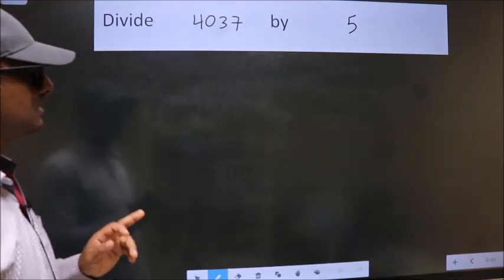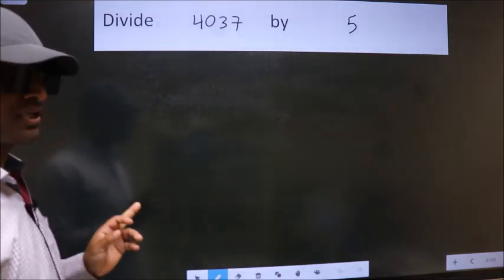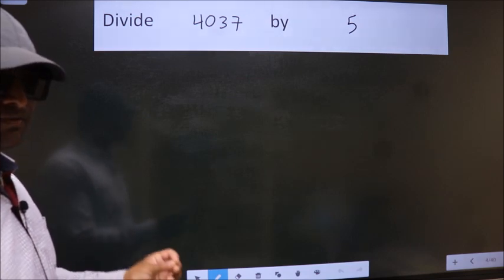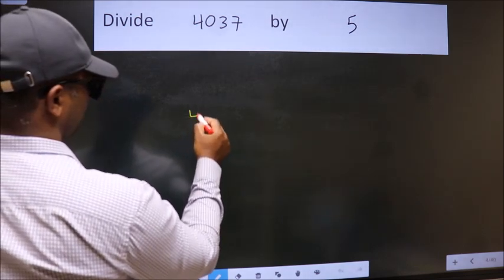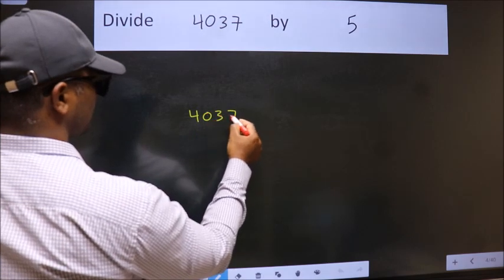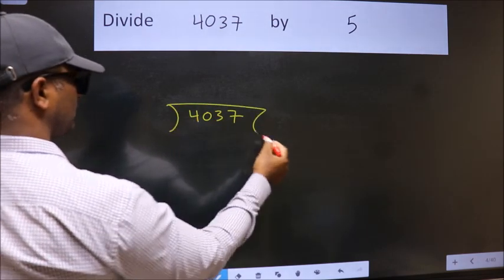Divide 4037 by 5. To do this division, we should frame it in this way. 4037 here, 5 here.